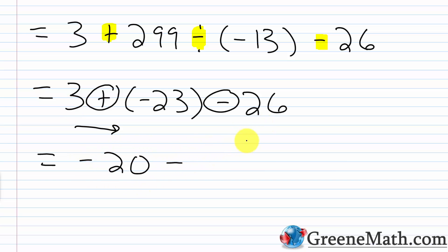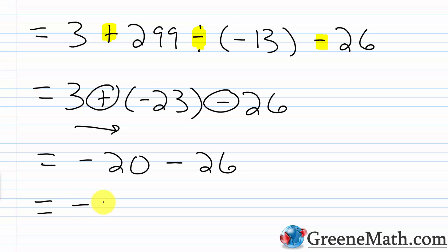Now we're subtracting away 26. I can just think about this as negative 20 plus negative 26. The sign would be negative — use the common sign — and then just add the absolute values. 20 plus 26 is 46. So our answer here is negative 46.